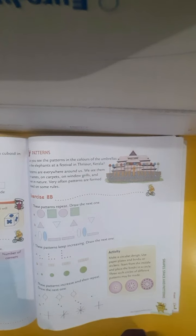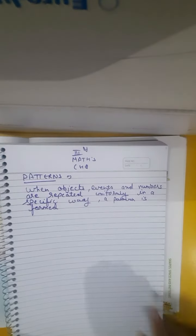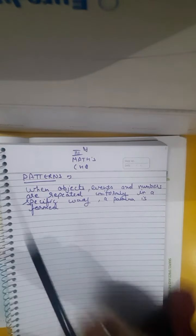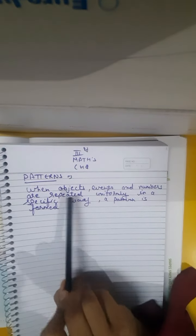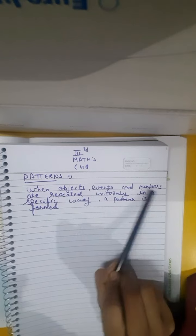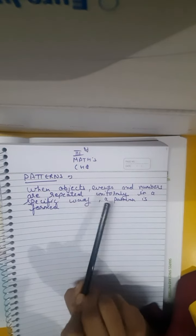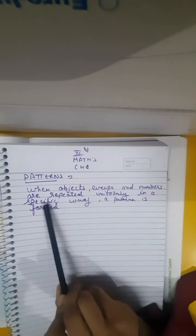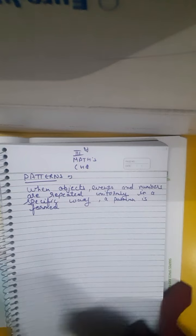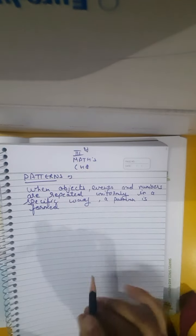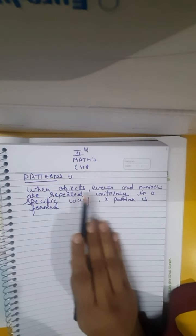In everyday life we see many patterns. Let us learn different kinds of patterns. When objects, events, and numbers are repeated uniformly in a specific way, a pattern is formed.